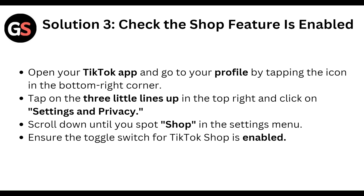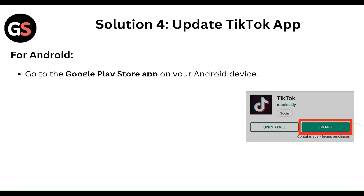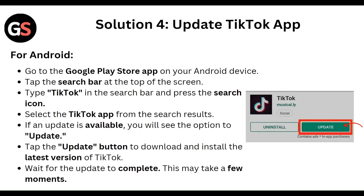Finally, update the TikTok app. For Android, go to the Google Play Store, tap the search bar at the top of your screen, and type TikTok. Press the search icon and select the TikTok app from the search results. If an update is available, tap Update and wait for the installation process to complete.